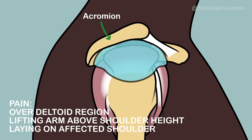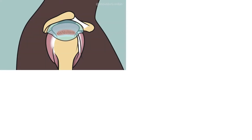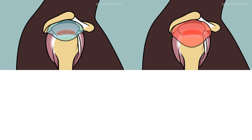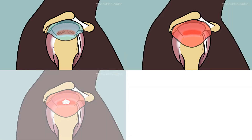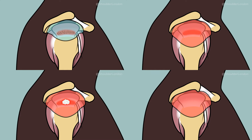Conditions that can cause subacromial shoulder pain include rotator cuff tendinopathy, subacromial bursitis, calcific tendonitis, and shoulder impingement. These conditions can occur on their own, but are often combined.